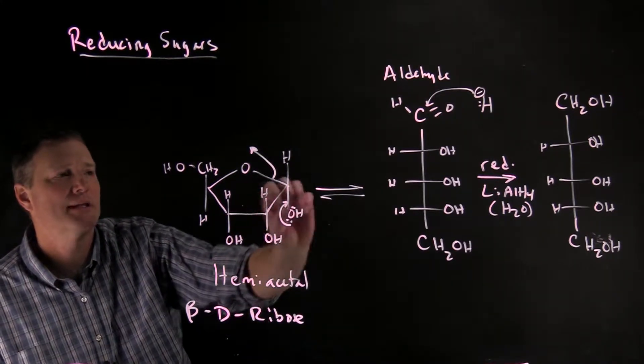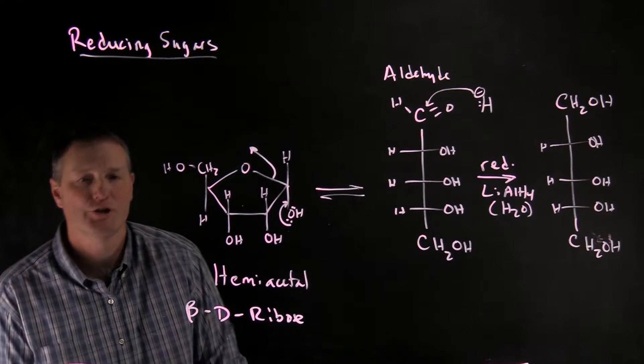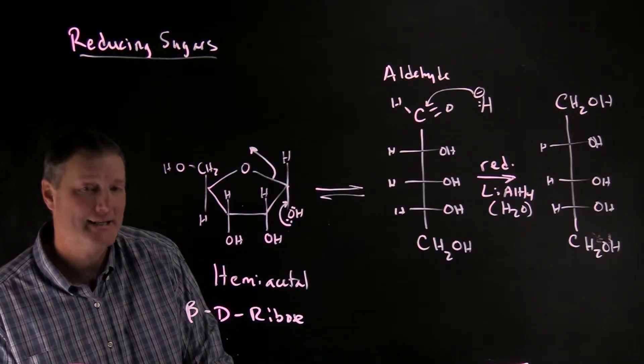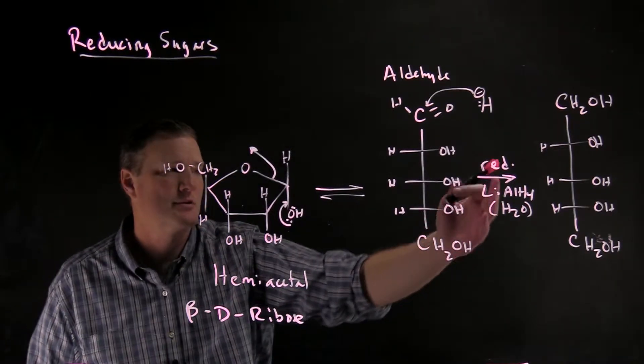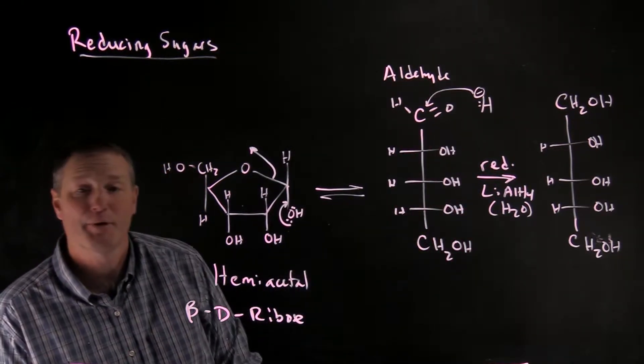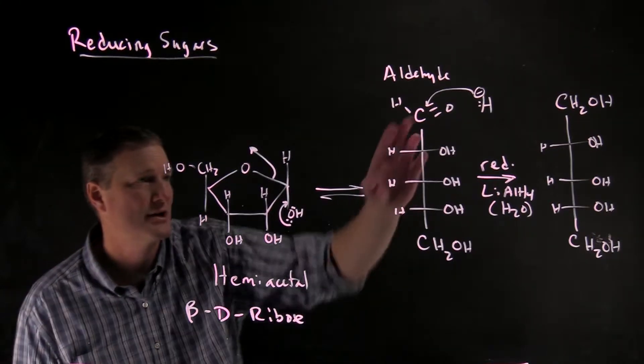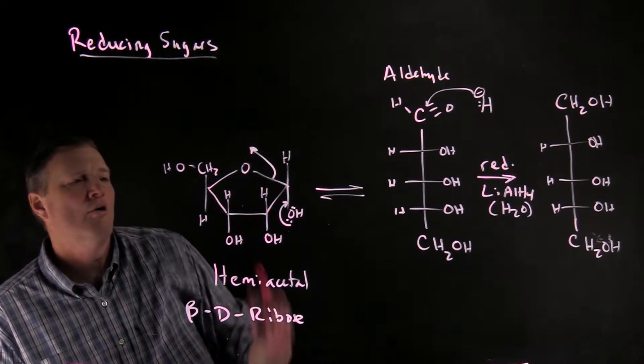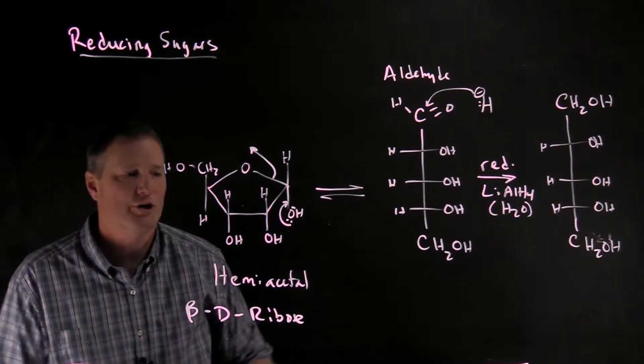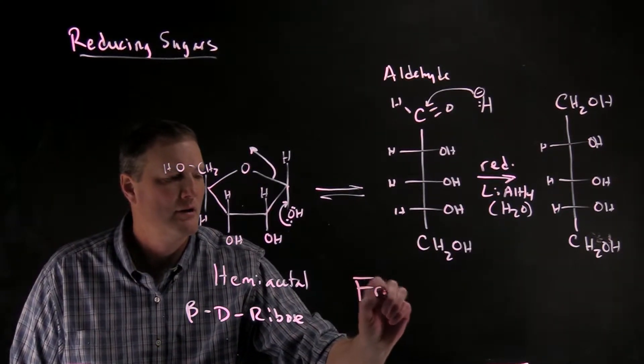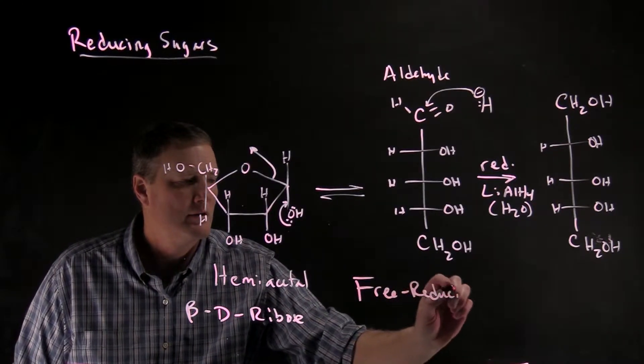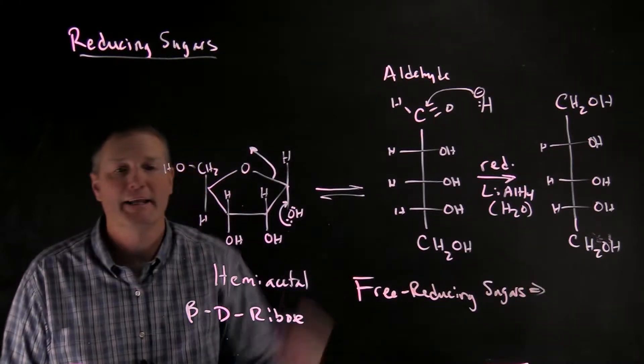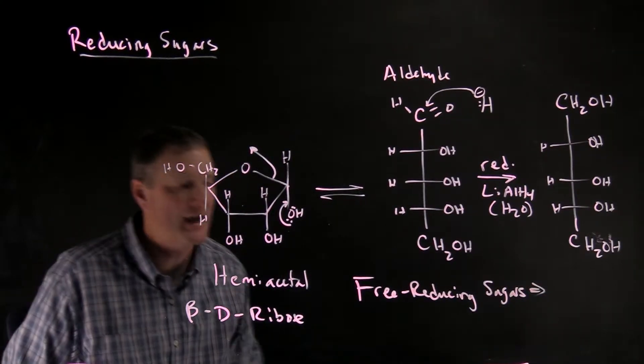So if sugars had the ability to open up to their open chain form, they can be reduced. Likewise they could potentially be oxidized as well. So instead of treating this with a reducing agent, let's say I treated it with potassium permanganate or some strong oxidizer, I could oxidize this carbon to a carboxylic acid. So what are called free reducing sugars, these are sugars that can open up to their open chain aldehyde form.